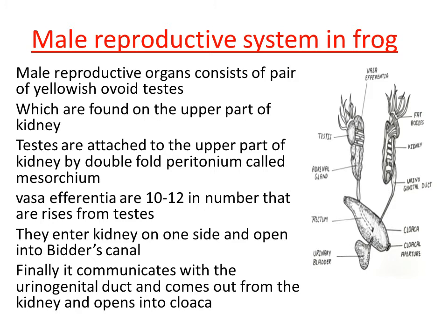Both the excretory product of the kidney and the sperms from the testes pass through the same urinogenital duct. This urinogenital duct opens into the common chamber called cloaca, and finally the sperms eject out through the aperture present on the cloaca, called the cloaca aperture. Children, you have to practice the diagram — draw it and make sure you are thorough with all the distinct parts of the male reproductive system, then review the functions.